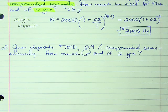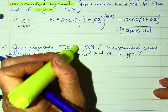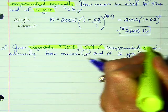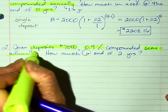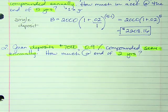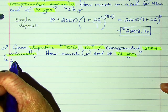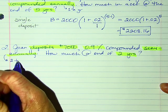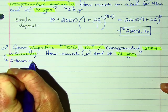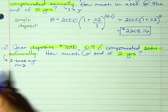Let's highlight what's important: I have my deposit, my interest rate, semi-annually, and two years. Semi-annually means twice — two times a year — so n = 2.